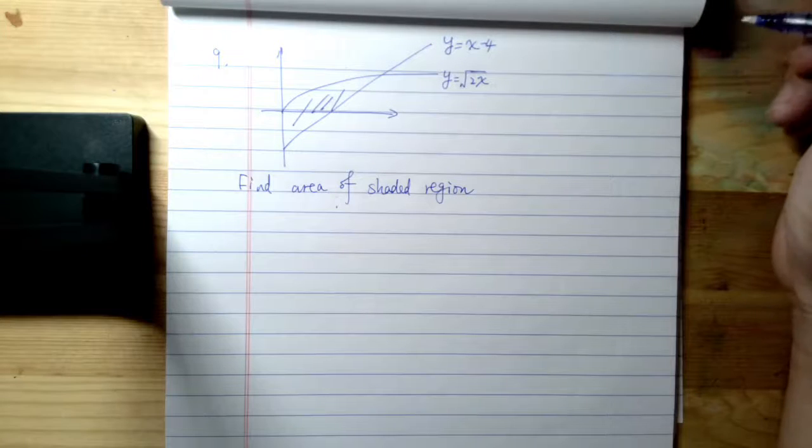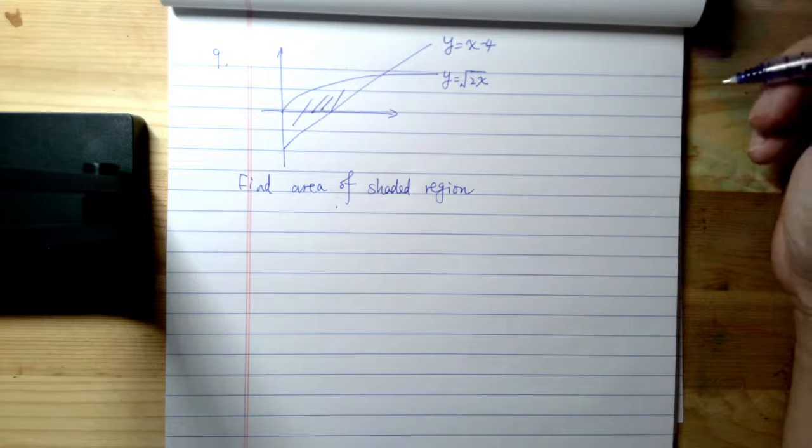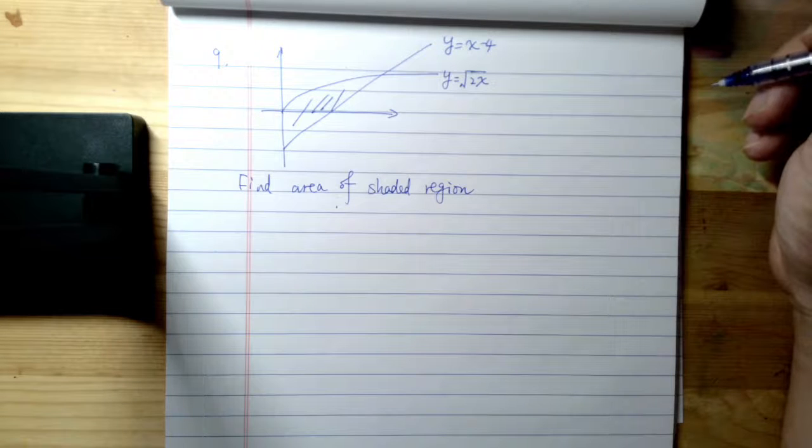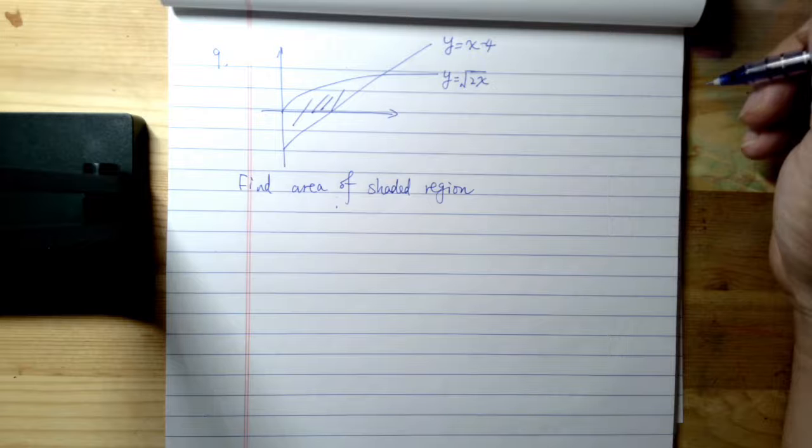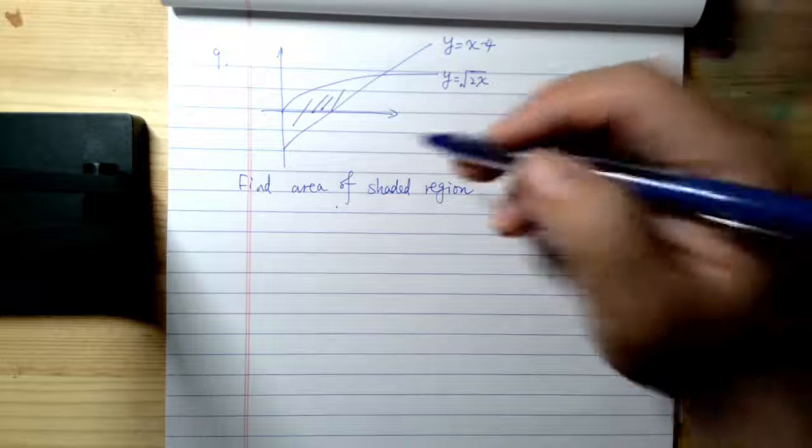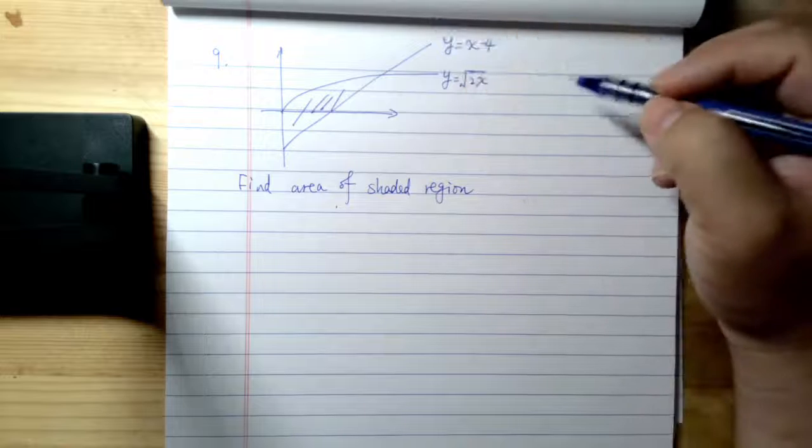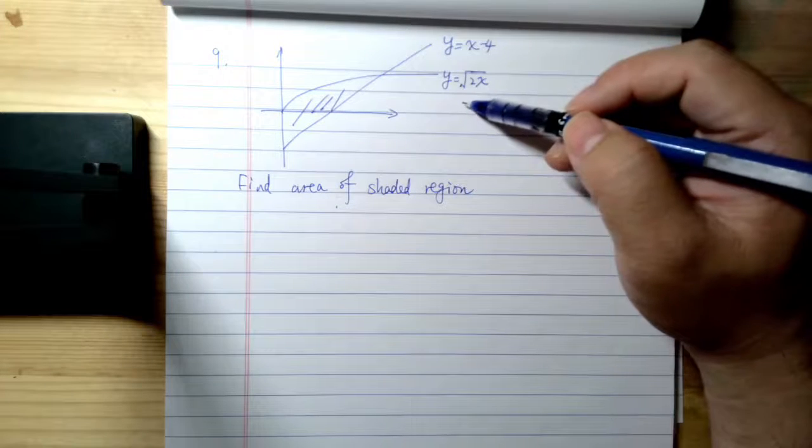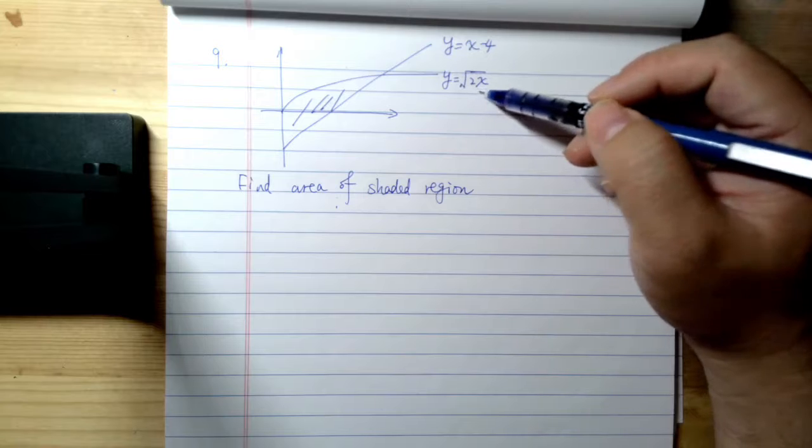Okay, so now let's look at another problem. It's for finding the area of the shaded region. Two functions are given: y equals x minus 4 and y equals square root of 2x.